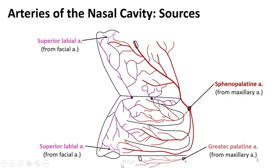Another branch from the external carotid artery that gives some supply to the nasal cavity comes from the facial artery — specifically the superior labial artery will give off nasal branches that enter and supply around the nares.